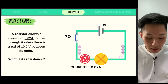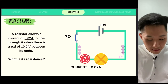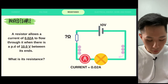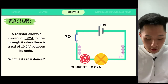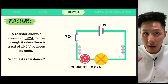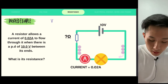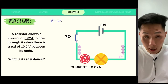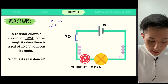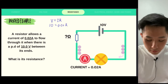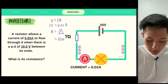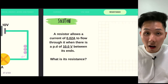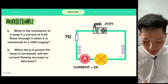Let's look at an example. A resistor allows a current of 0.02 amperes to flow when there is a potential difference of 10 volts. What is the resistance? Using V = IR: 10 = 0.02 × R, so R = 10 ÷ 0.02 = 500 ohms. That's the resistance of the circuit.